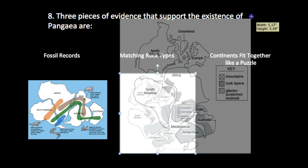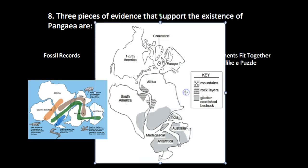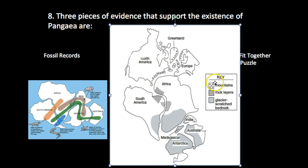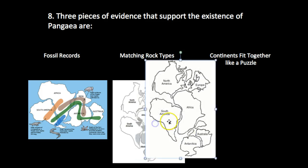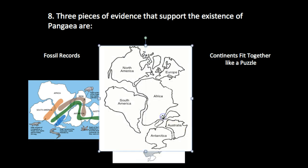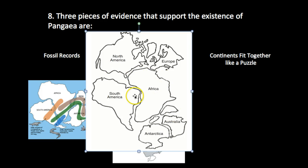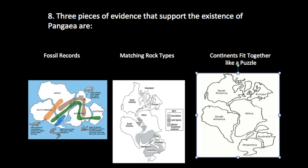The second type of evidence is matching rocks. As you can see here — and this is actually from the state exam — we have mountain ranges in Greenland, Europe, and North America that actually line up. Different types of rock layers match in certain types or have the same exact pattern. There must have been a glacier that scraped all the rock. So we have matching rock layers as geological evidence as well. And the easiest one to remember is that the continents fit together like a puzzle — if you cut them all up, you could probably figure out what was connected to what.